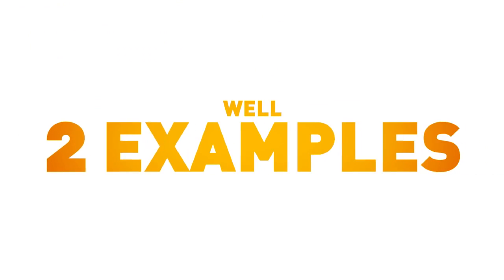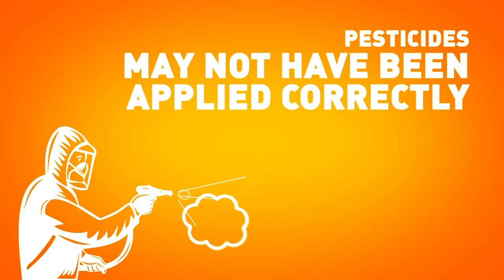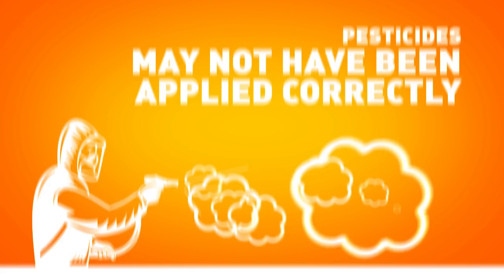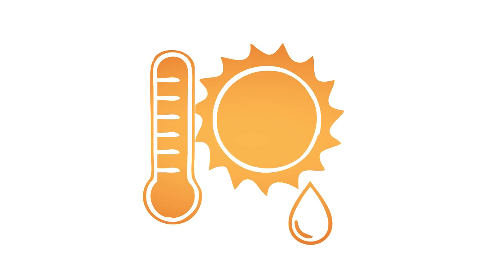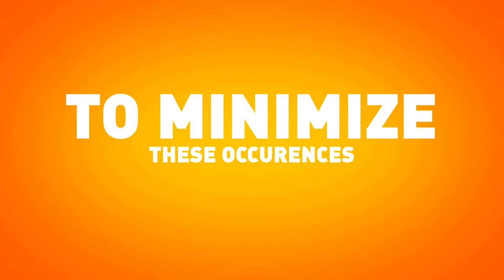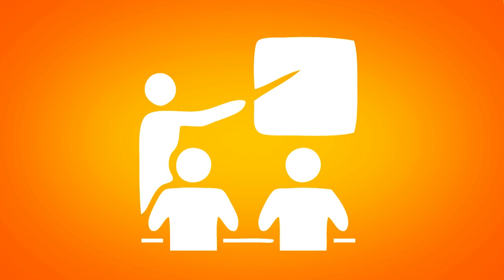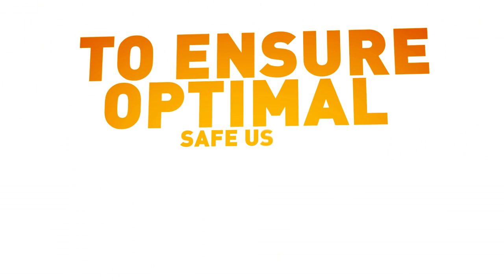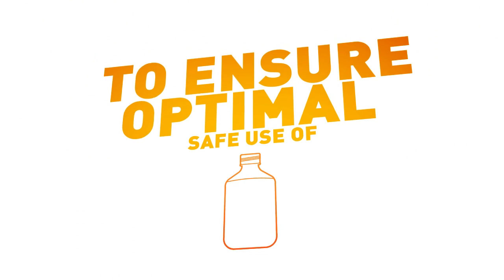For a number of reasons, two examples are: pesticides may not have been applied correctly, or exceptional climatic or crop conditions may have occurred. To minimize these occurrences, the crop protection industry has set up targeted training programs for farmers and users to ensure optimal safe use of pesticides.